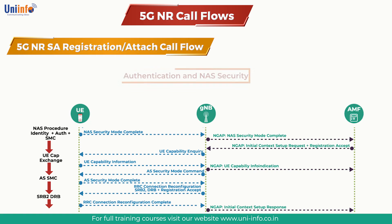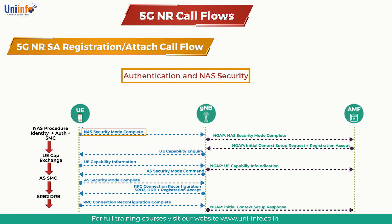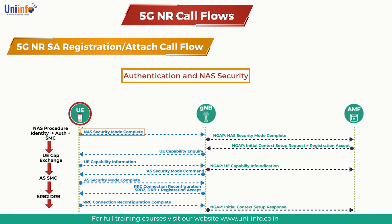Next comes Authentication and NAS Security. The core network performs an authentication procedure to verify the UE is legitimate and legally authorized to receive service from the network. The AMF signals the selected NAS security algorithm to the UE and requests the IMEISV from the UE as part of the NAS Security Mode Command. The UE responds with completion of the NAS security procedure and contains the IMEISV in the Security Mode Complete message.